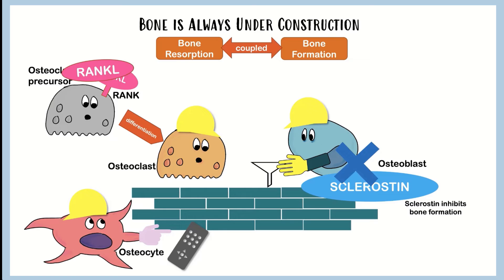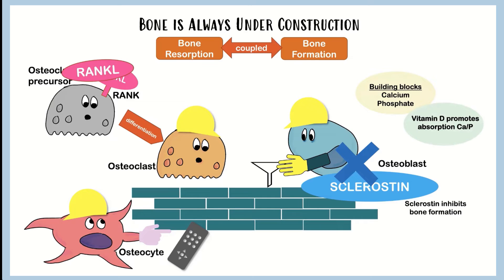Now I'm going to add in some basic physiology to see how our hormones, vitamins, and minerals affect this. The building blocks - the cement being laid in the bone - are basically just calcium and phosphate, so you need enough of these building blocks to make healthy bones. Vitamin D helps us absorb these building blocks from our diet, and PTH activates vitamin D so that it can do that. So you can see how PTH and vitamin D help us absorb these building blocks to make healthy bone.